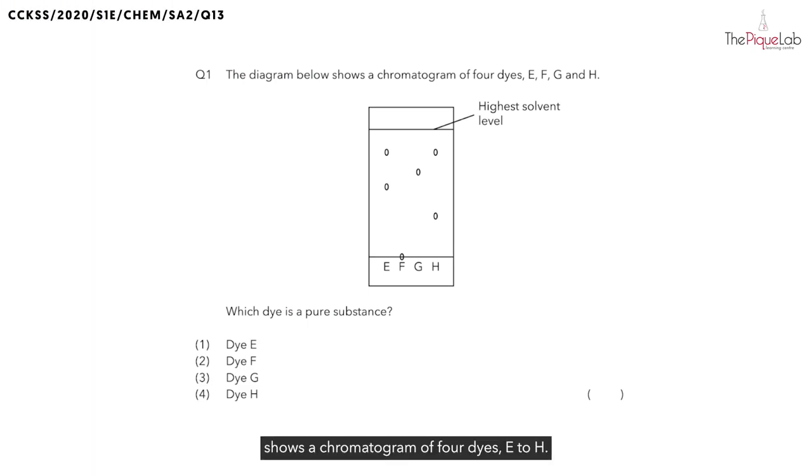So let's begin. Question one. The diagram below shows a chromatogram of four dyes E to H. What is a chromatogram? A chromatogram is actually the results of paper chromatography.